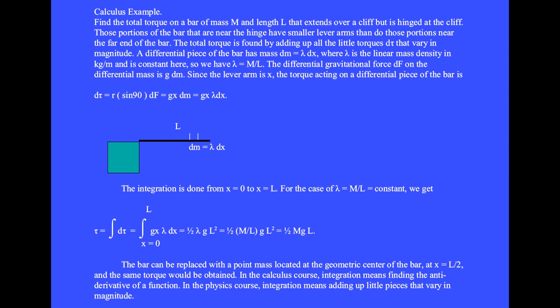The bar can be replaced with a point mass located at the geometric center of the bar, at x equal L over 2, and the same torque would be obtained.